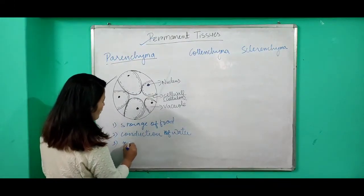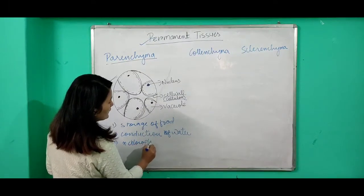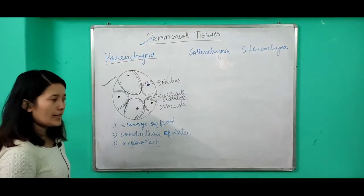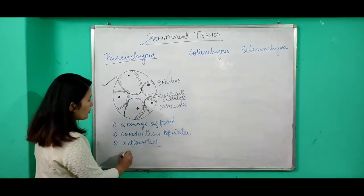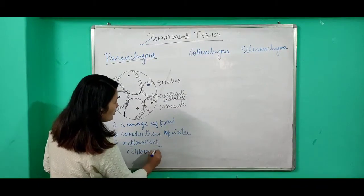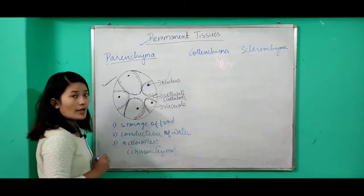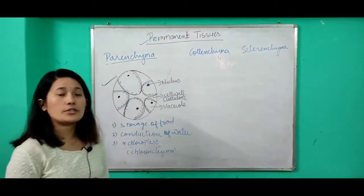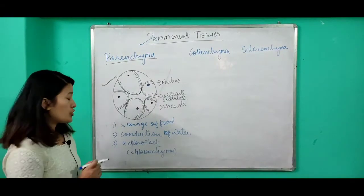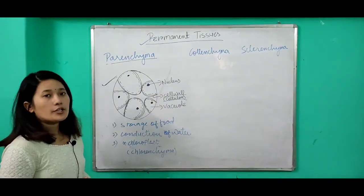Some parenchyma cells have an organelle called chloroplast in them. These are termed as chlorenchyma. Since chloroplasts contain chlorophyll, these parenchyma cells with chloroplasts are capable of preparing their own food through photosynthesis.